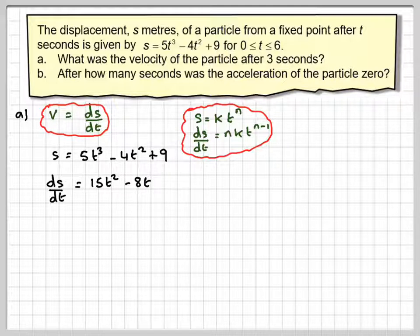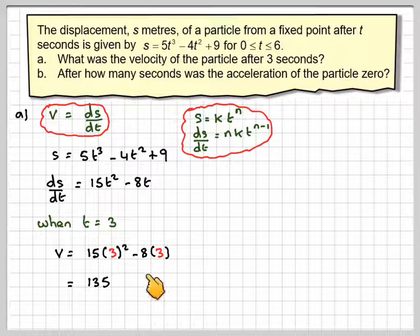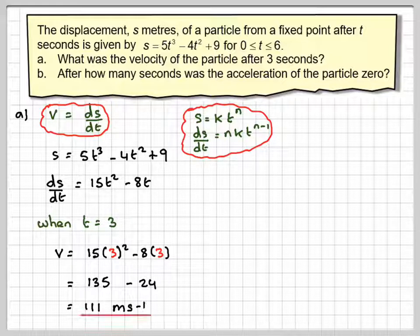We want to find the velocity after 3 seconds, so if we put t equals 3 in here, because this is v, v will be 15 times 3 squared minus 8 times 3. So 9 times 15 gives me 135 minus 8 times 3, which is 24. 135 minus 24 gives me 111 metres per second.